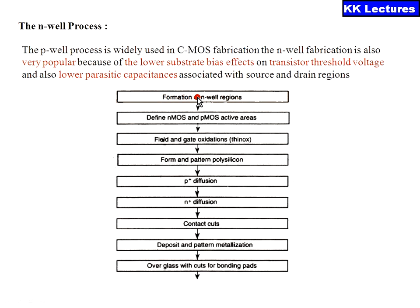Now what are the steps we are following in the N-Well process? First, formation of the N-well region. Second, defining the N and P-MOS active areas. Third, field and gate oxidation. Fourth, formation and patterning of poly to form the windows. Fifth, covering the N-well and forming P-type diffusion to form the P-MOS transistor. Sixth, covering the P-type transistor and diffusing N-type material to form the N-type transistor. Then forming the contact cuts, depositing and patterning metal to form the terminals, and applying over-glass with cuts for bonding pads for the final package.